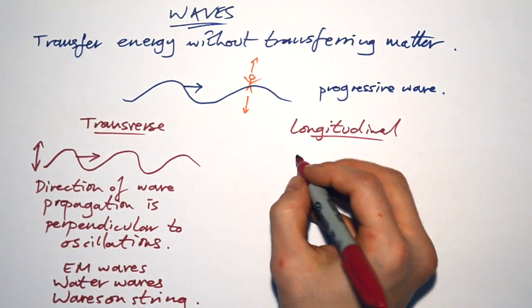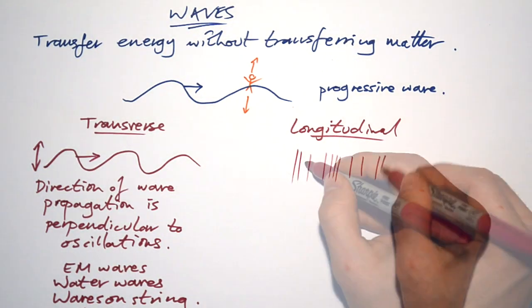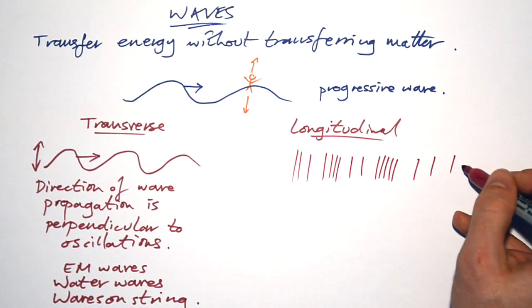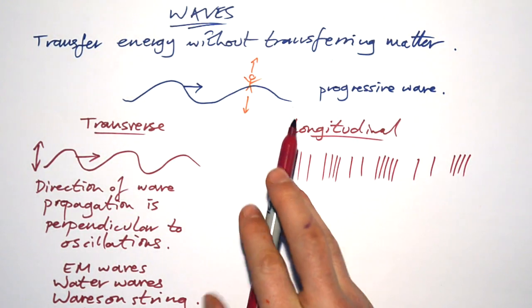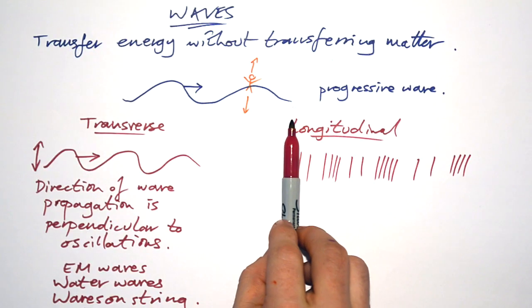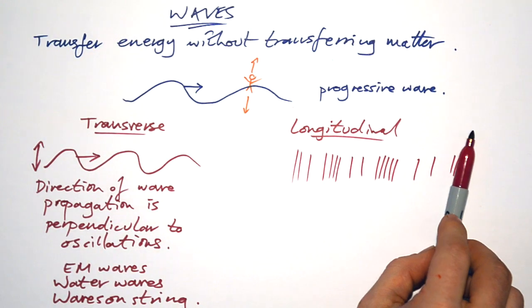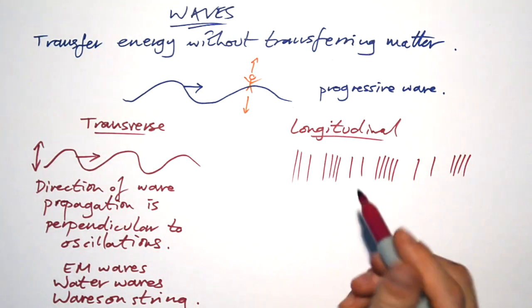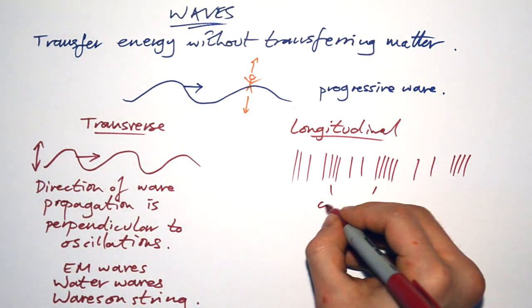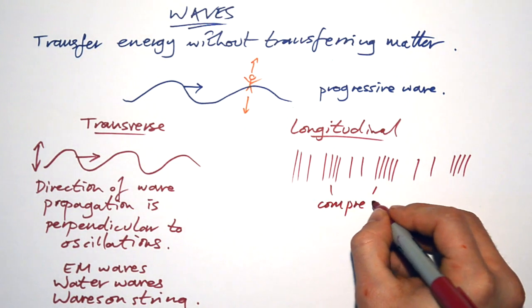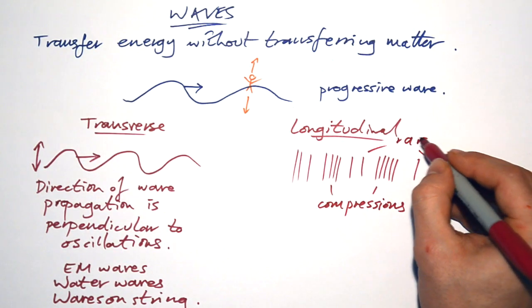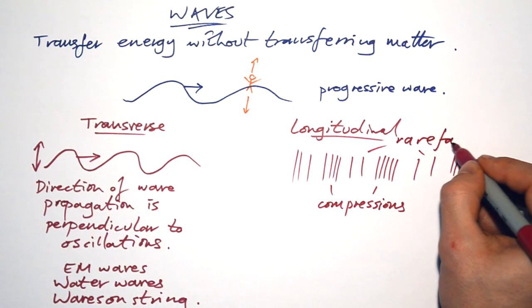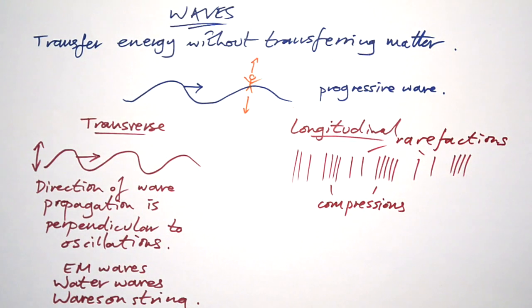Longitudinal is a little bit more tricky. This is where we actually have not something that looks like a proper wave in this case, but we actually have bits of matter. So this could be particles in the air or particles in the ground. They're actually being compressed, compressions there, or rarefacted. Rarefactions is just the opposite of a compression.